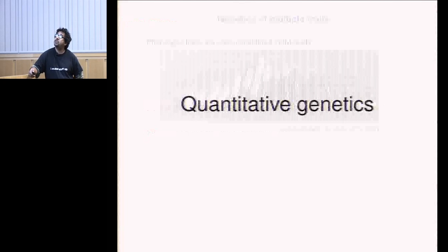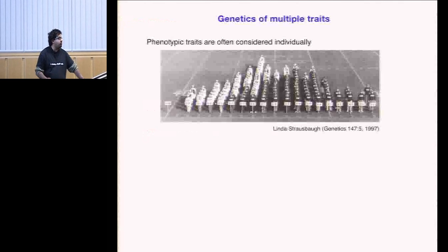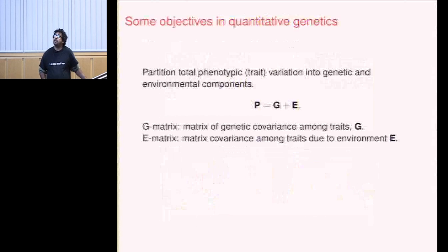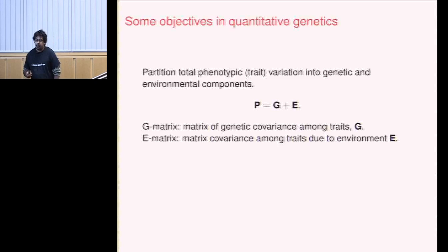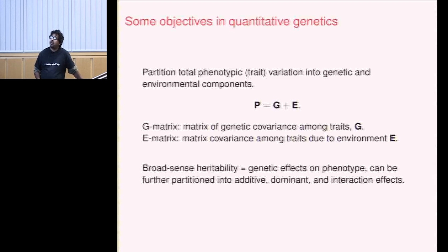The first part is quantitative genetics. A classic idea is that people ask how heritable height is — a very old question. More and more, we care about many phenotypes jointly. For example, dogs have lots of traits, and we want to understand how these traits behave together. A classic idea is: given a phenotypic variance-covariance matrix for 15, 20, or 1,000 traits, how do we break it up into a genetic part and an environmental part? The classic notion is broad-sense heritability — genetic effects on phenotype — further partitioned into additive, dominant, and interaction effects.